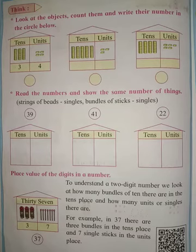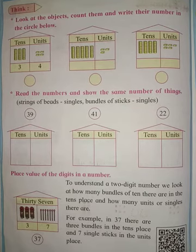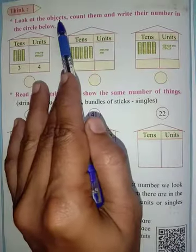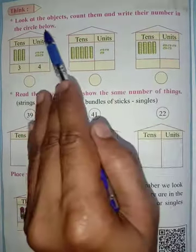Hello everyone, today we are going to solve the exercise on page number 37. The exercise is: look at the objects, count them and write their number in the circle below.